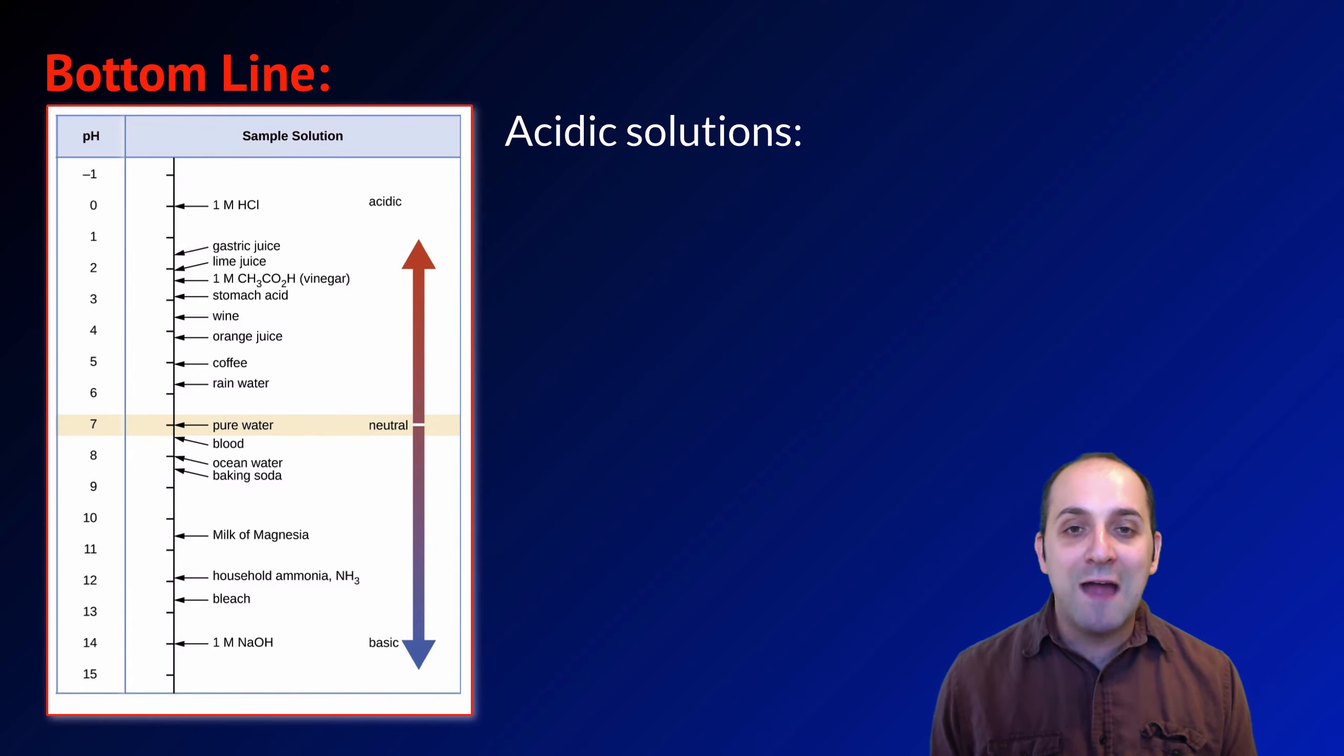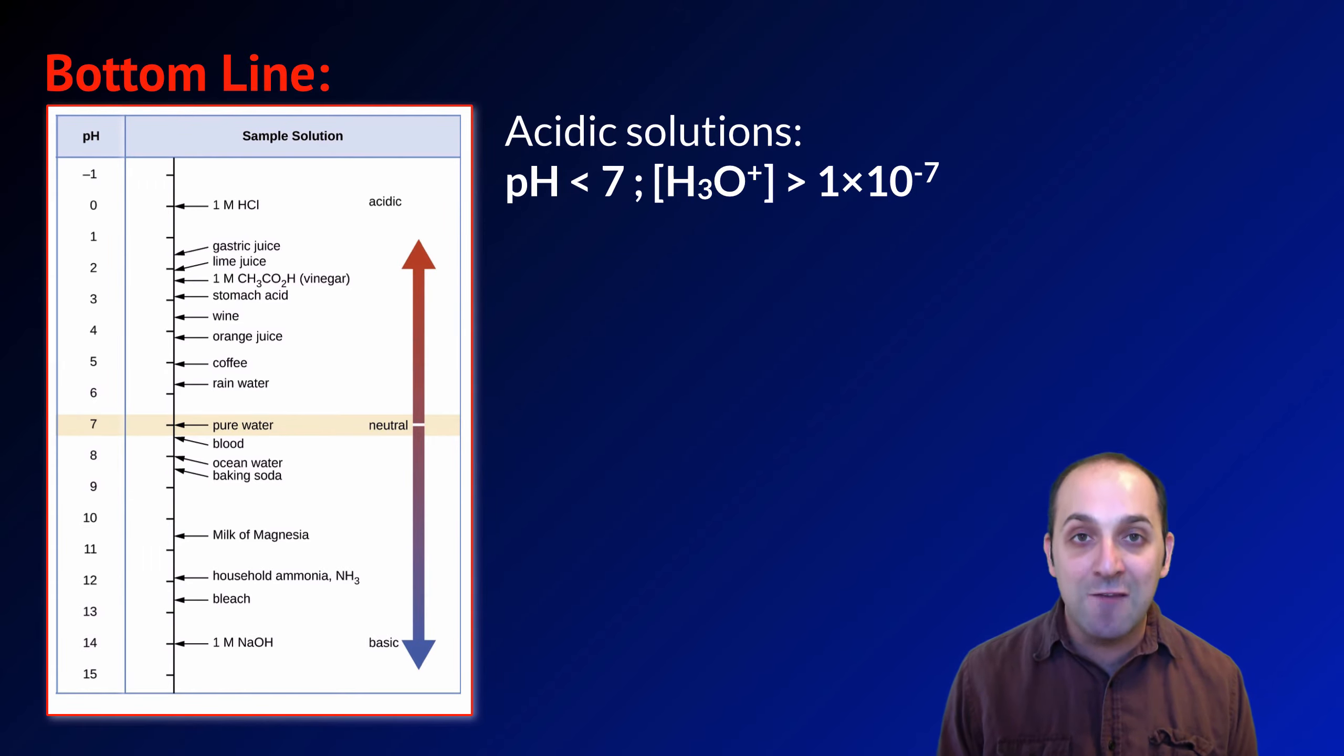The bottom line here is that for acidic solutions, the pH is going to be less than 7. The concentration of H3O plus ions has to be greater than 1 times 10 to the negative 7. Of course, as we're talking about negative exponents, if your concentration of hydronium ions is greater than 1 times 10 to the negative 7, its negative exponent is going to be lower than negative 7. Negative 6, negative 5, negative 2, which is why the pH value of any acidic solution is less than 7.